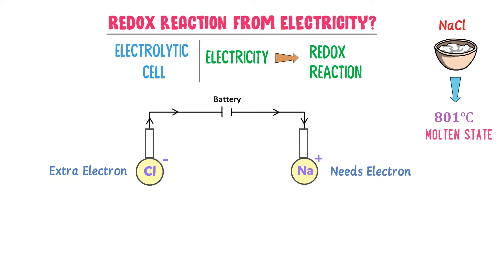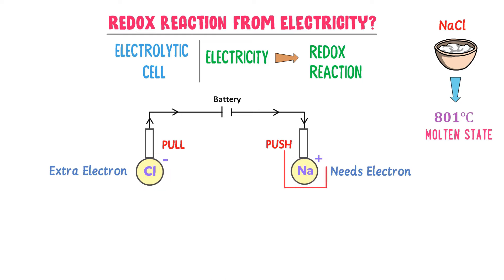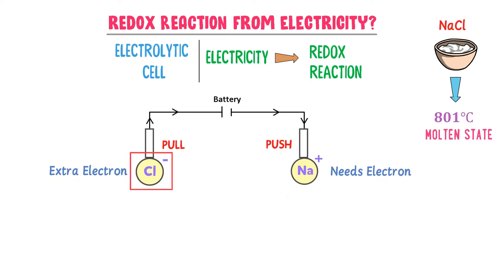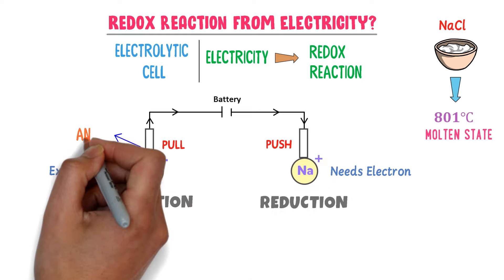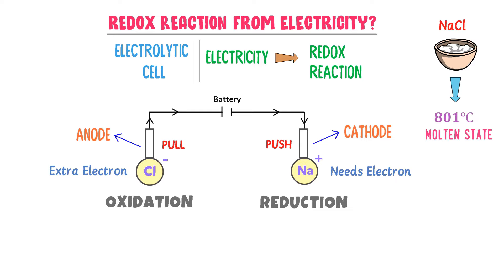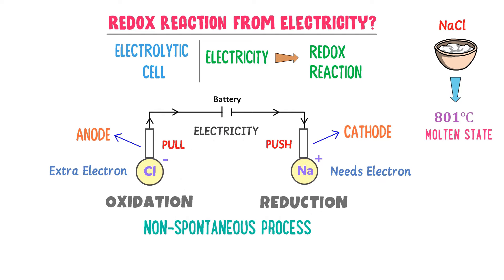So we will use a battery. The battery will pull electrons from chlorine and push them towards sodium — the battery drives electrons from chlorine towards sodium. The number of electrons lost by chlorine equals the number of electrons gained by sodium. Chlorine ion loses an electron so it is oxidized, while sodium ion gains an electron so it is reduced. Thus, the plate where oxidation takes place is the anode, and the plate where reduction takes place is the cathode. This is a non-spontaneous process which does not occur on its own — we use a battery or electricity to generate the redox chemical reaction. In the next lecture, we will learn more about electrochemistry.